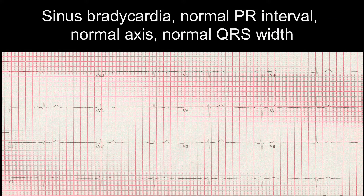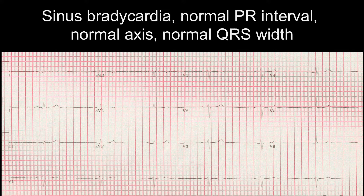This ECG shows sinus bradycardia, and we know this because the RR interval is over five big squares. It shows a normal PR interval — that is a PR interval between three and five small squares. It shows a normal axis and a normal QRS width — that is a QRS width of less than three small squares. This is all covered in our basic ECG tutorial. Sinus bradycardia does not require treatment unless a patient is symptomatic.